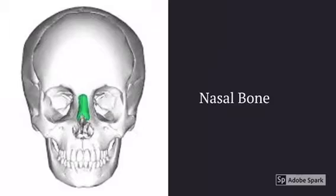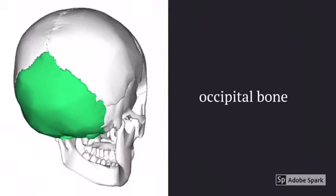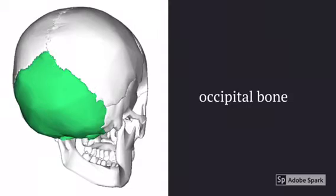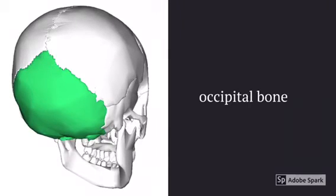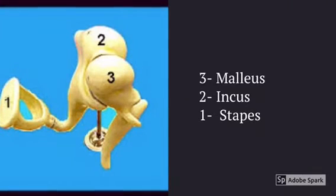This is the nasal bone, also known as the nose. This is the occipital bone — should be easy to remember, same place as the occipital region. These are the three bones of the inner ear called the malleus, incus, and stapes.